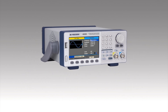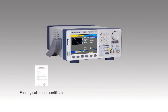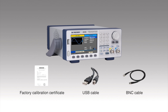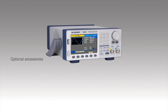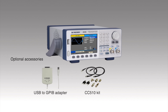In the box you will find a certificate of calibration, USB cable, and BNC cable. Other optional accessories include a USB to GPIB adapter, general purpose signal interconnect kit, and function generator test lead set.